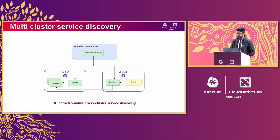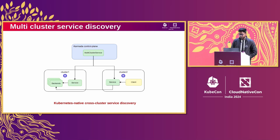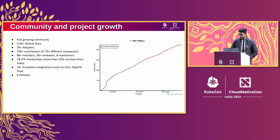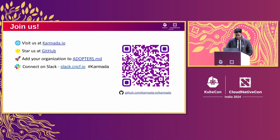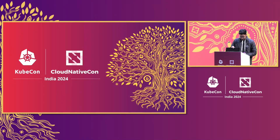Another amazing feature that Karmada has is multi-cluster service discovery, which allows your workloads to communicate with services deployed in another cluster. Here you can see we have a service in cluster two and an application deployed in cluster one, and that application is accessing the service — it is Kubernetes native. You can do cross-cluster service discovery using Karmada. We are a fast-growing community with 700-plus contributors from 70-plus different companies. Thank you for your time. If you enjoyed Karmada, give us a star on GitHub and join the community on Slack. We'll see you next time.